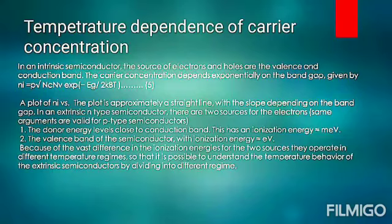In an intrinsic semiconductor, the source of electrons and holes is the valence and conduction band. The carrier concentration depends exponentially on the band gap, given by this equation. A plot of n versus 1/T is approximately a straight line, with the slope depending on the band gap.